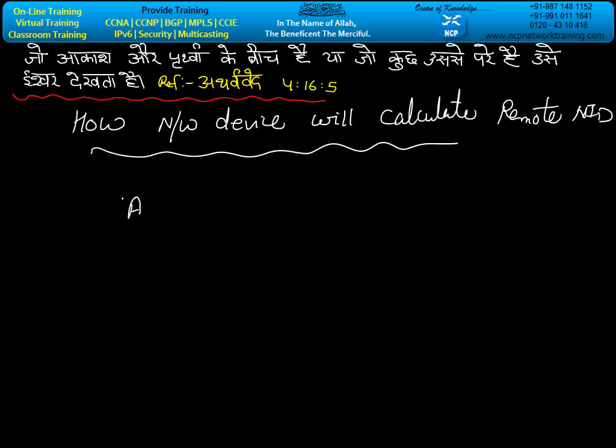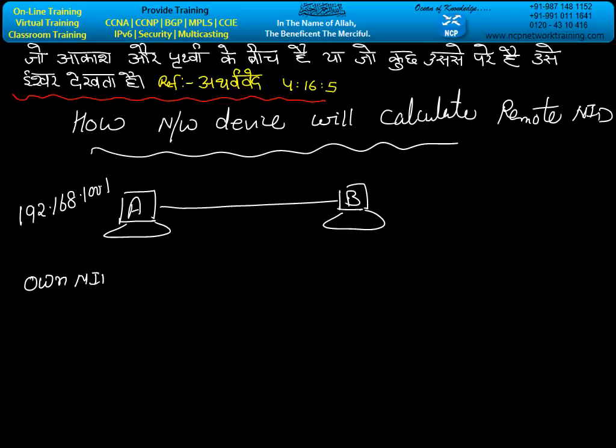Let's say we have two machines, machine A and machine B. Whenever we apply any IP address to machine A, let's say 192.168.100.1, whether we are applying the mask or not, this machine will calculate its own NID. The formula is: own IP, whatever IP address we are applying, and own mask.